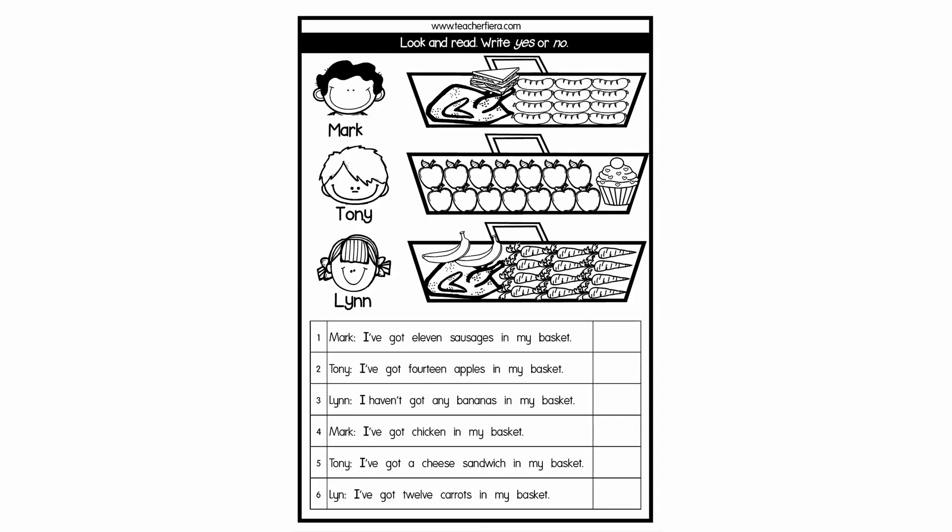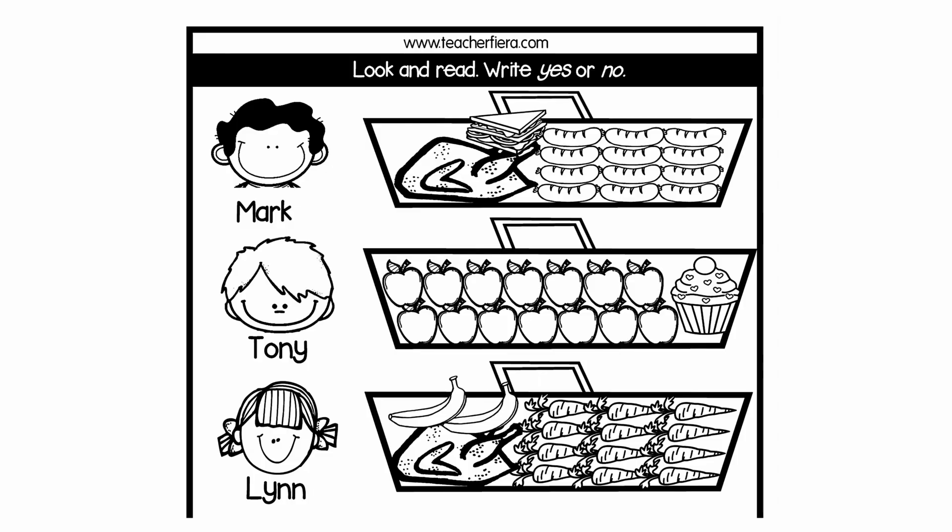After you're done, go to the next page. Look and read, then write yes or no. Mark, Tony, and Lin are shopping. Look at their baskets. Mark's got chicken, a cheese sandwich, and twelve sausages. Tony's got fourteen apples and a cupcake. Lin's got chicken, two bananas, and twelve carrots.